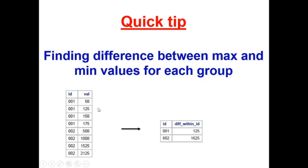Here I have two groups in the form of IDs: 001 and 002. For each ID, I want to find the difference between max and min values of column val.